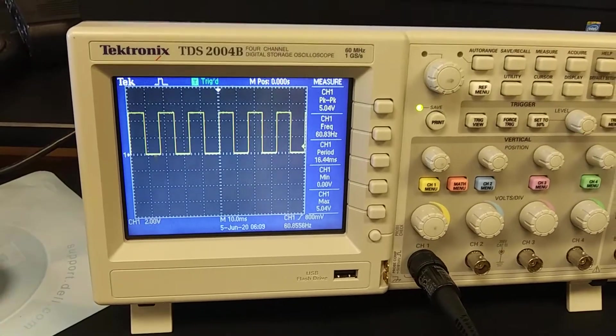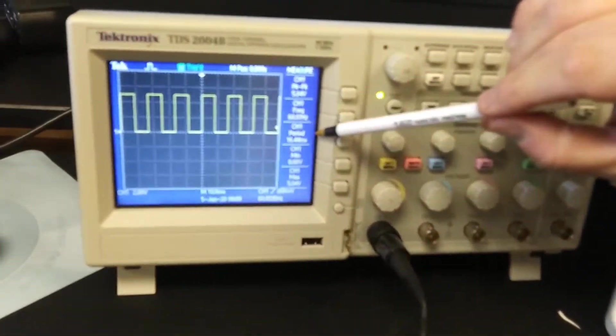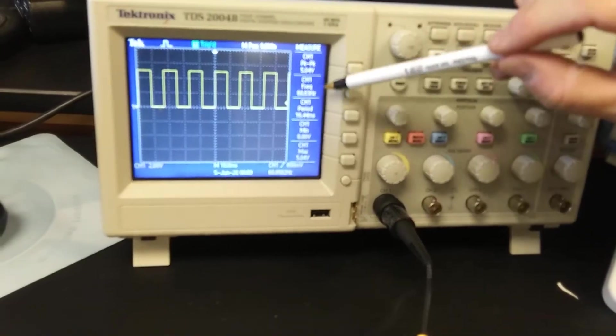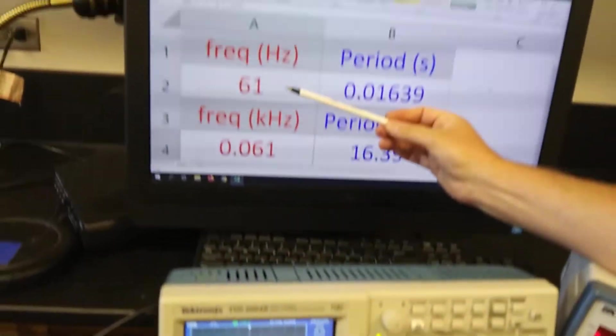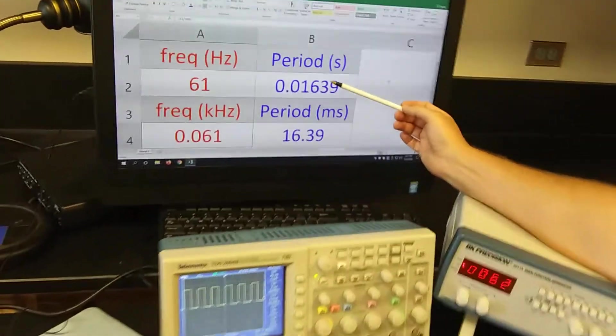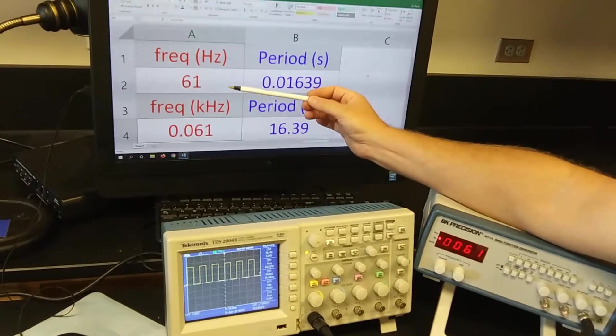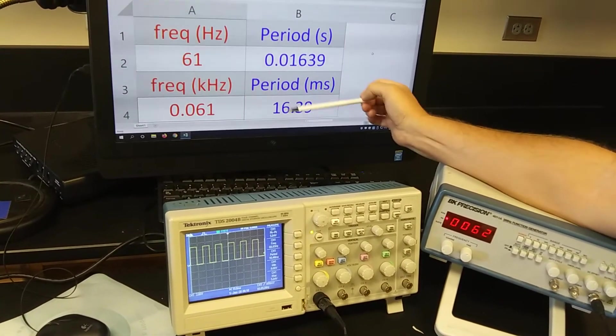Now let's look at the frequency and the period. So look on the screen behind me here. This is the frequency, we're at about 61 Hertz. To get the period if you don't know what I'm talking about that's just one over the frequency.